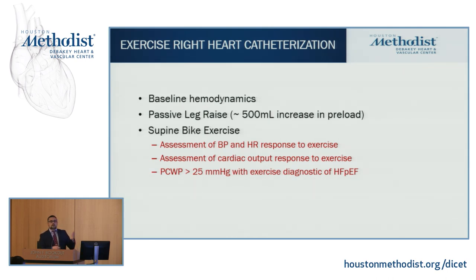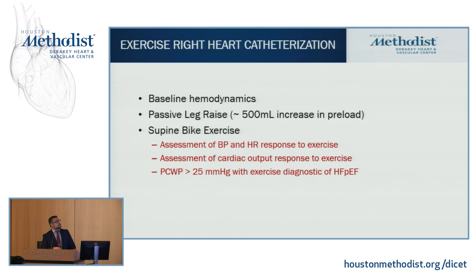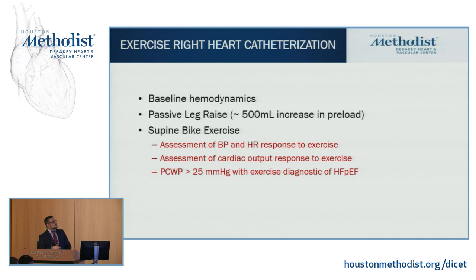If CPET does not clarify the etiology, the next step is exercise right heart catheterization. Access is via the right internal jugular vein; baseline hemodynamics are measured, then passive leg raise is performed — which increases preload by approximately 500 cc's. If the wedge pressure elevates, heart failure is confirmed. Otherwise, the patient exercises on a supine bike with incremental protocols; blood pressure, heart rate, and cardiac output responses are measured. If the wedge pressure rises above 25 mmHg with peak exercise, that is diagnostic of heart failure with preserved ejection fraction.